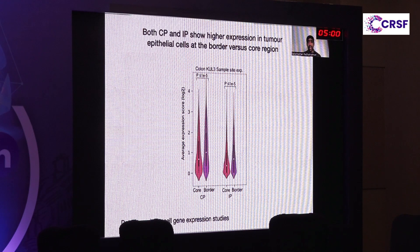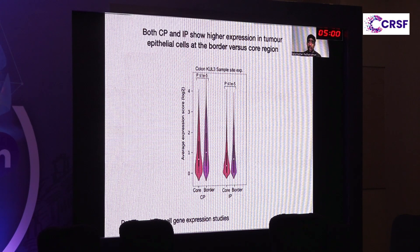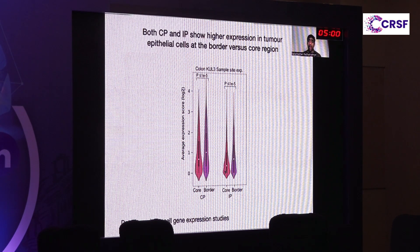In some single-cell datasets, we also had spatial information — whether the single cell came from the tumor periphery or the tumor core. When we examined expression in the context of this spatial architecture, we could see that both constitutive and immunoproteasome are higher in tumor cells at the border compared to the core. We hypothesize that tumor cells at the border are in closer contact with immune cells, and as a result these proteasomes are more enriched there compared to core cells, which have less exposure to the external microenvironment.